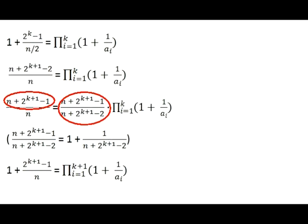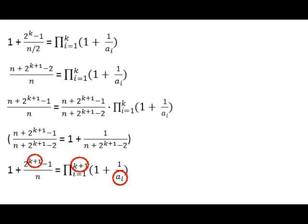This is exactly what we need. The resulting equality proves that we can construct k plus 1 positive integers ai that satisfies the equality for number k plus 1, based on such positive integer numbers that exist for the equality with number k.